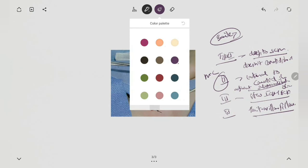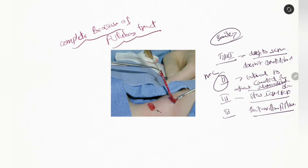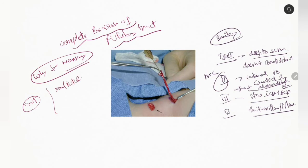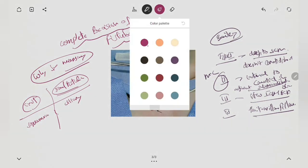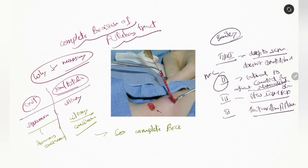The surgery performed is complete excision of the fistula tract. Surgery is necessary because in cases of cyst, the lining epithelium is squamous, and in sinus or fistula, it is ciliary. The chances of malignancy are significant — squamous epithelium may develop into squamous carcinoma, whereas the ciliary epithelium may give rise to ciliary carcinoma, that is adenocarcinoma. Therefore, complete excision is the treatment of choice.